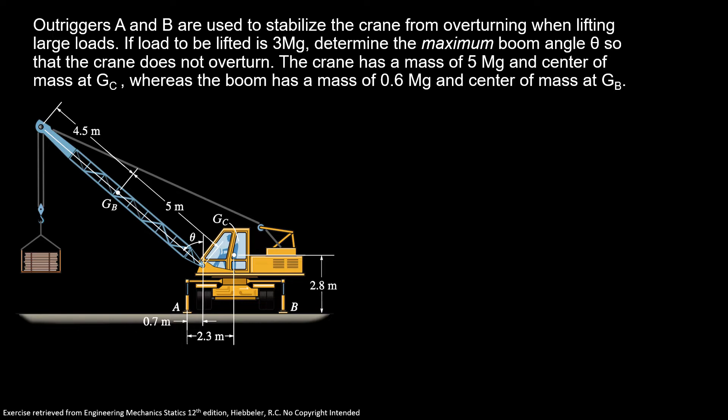Now, let's see our problem. Outriggers A and B are used to stabilize the crane from overturning when lifting large loads. If loads to be lifted is 3 megagrams, determine the maximum boom angle theta so that the crane does not overturn. The crane has a mass of 5 megagrams and center of mass at Gc, whereas the boom has a mass of 0.6 megagrams and the center of mass at Gb.